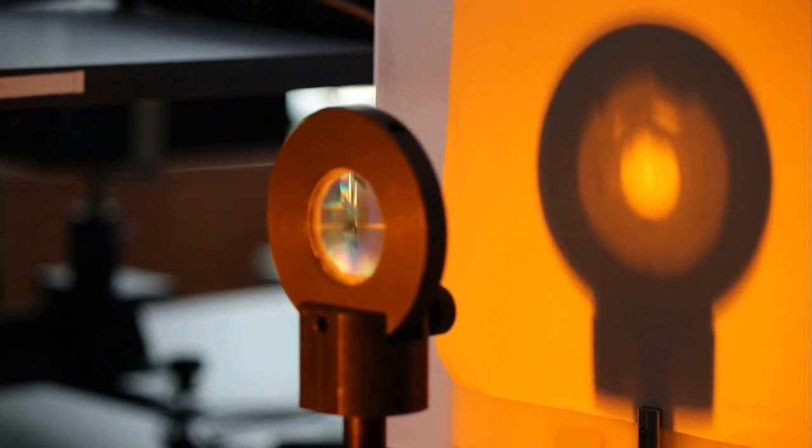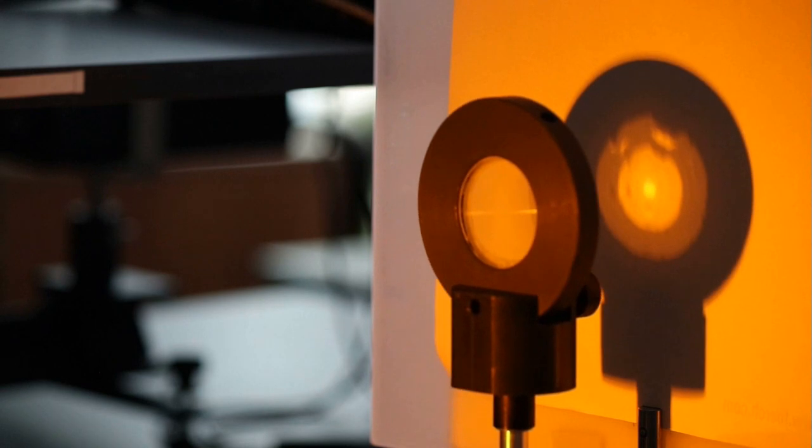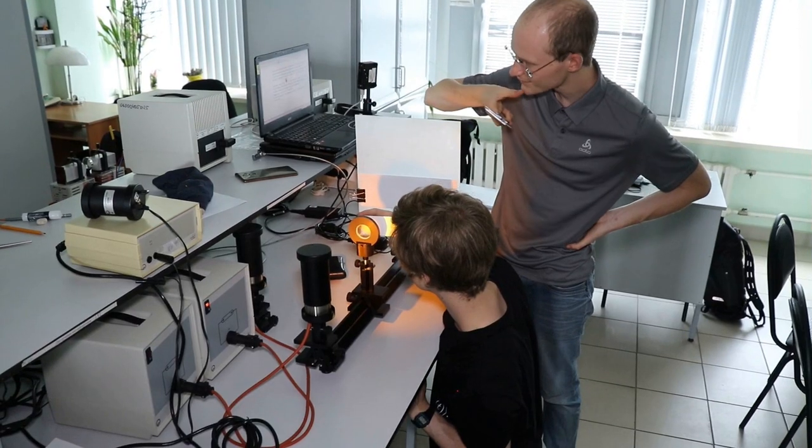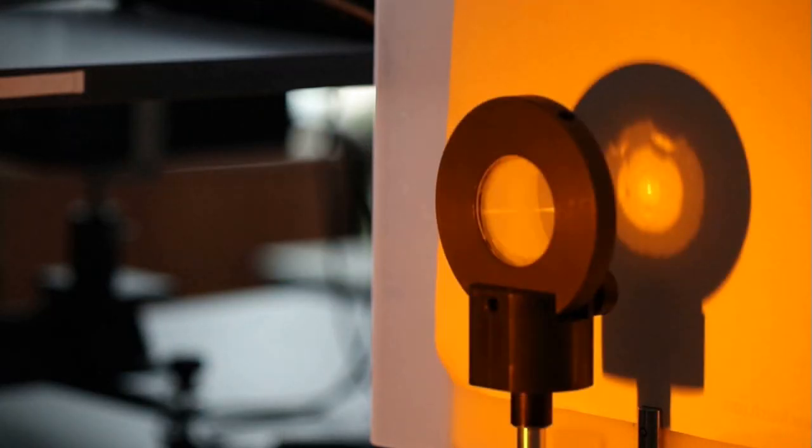Then at certain positions of the lens we can see the focal points where the image of the light source on the screen gets sharp. Adjusting positions of the optical elements, we try to find as many focal points as possible.